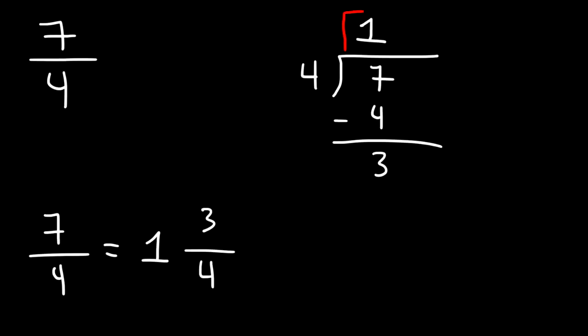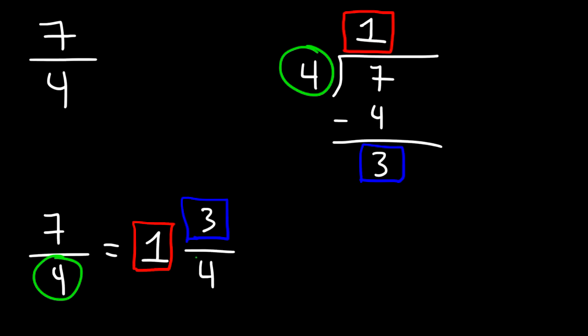Whatever number you get here, this is going to be the whole number. And the remainder will always be the numerator of the mixed fraction. And whatever you see here, that's going to be the denominator of the fraction. And so 7 over 4 is 1 and 3 fourths.